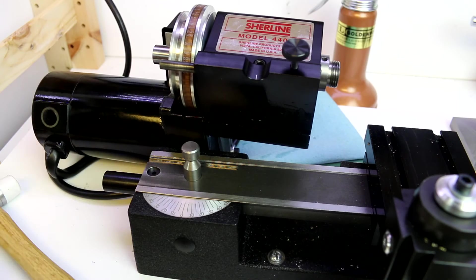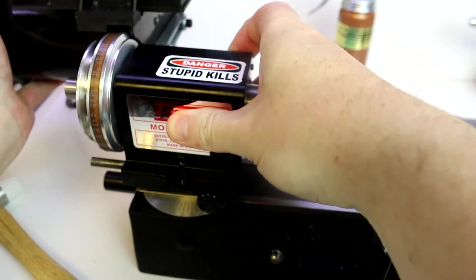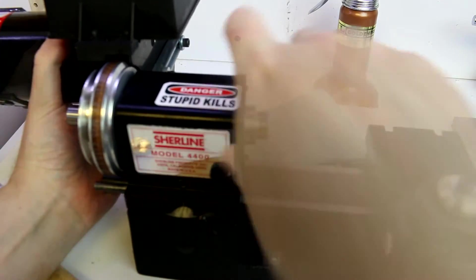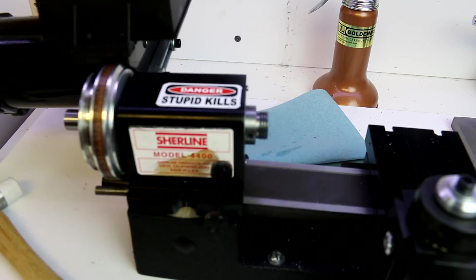So it'll be fun to see how hard that is to get back on when that time comes. But we just take it out, set it aside, make sure you don't lose it. And then we put the head back on over that spindle. And we tighten it down.